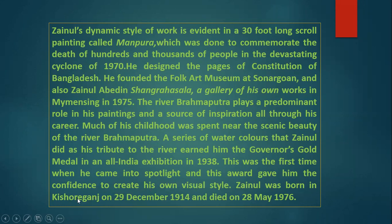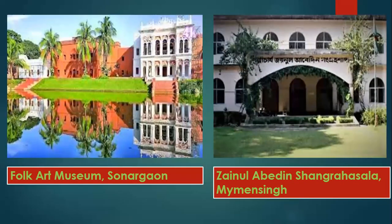Much of his childhood was spent near the scenic beauty of the river Brahmaputra. A series of watercolors that Zainul did as his tribute to the river earned him the Governor's Gold Medal in an All India exhibition in 1938 — the first time he came into the spotlight. This award gave him the confidence to create his own visual style. Zainul was born in Kishoreganj on 29 December 1914 and died on 28 May 1976. Here is the Folk Art Museum, Sonargaon, which he founded, and the Zainul Abidin Sangrahashala, Mymensingh.